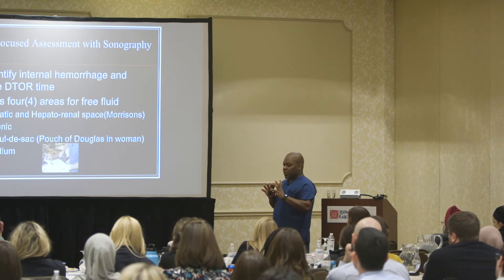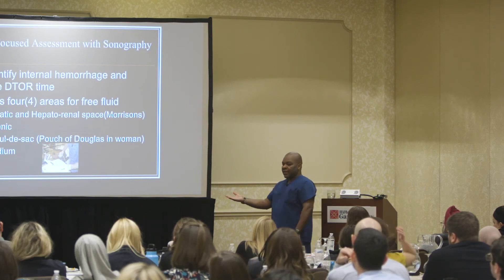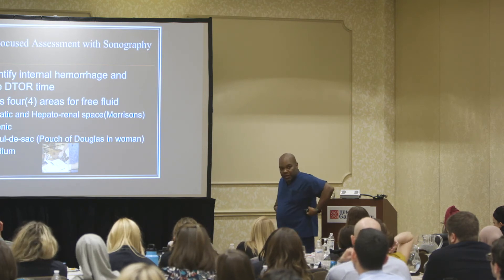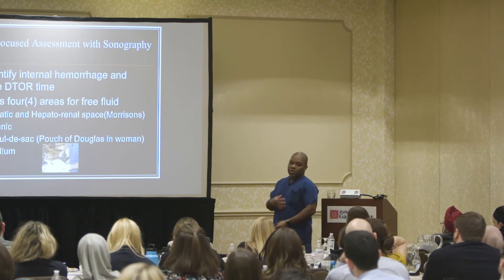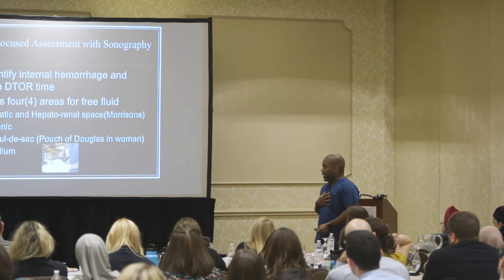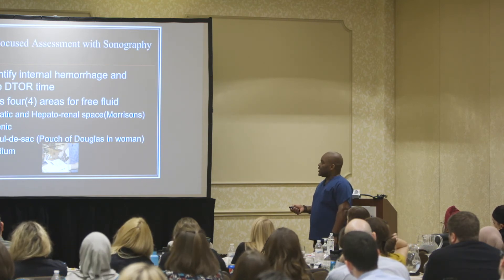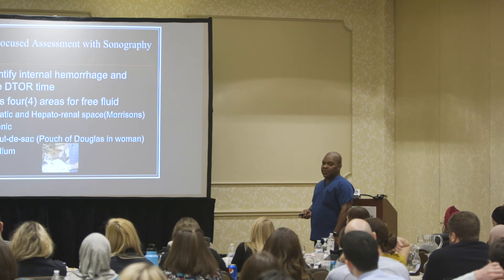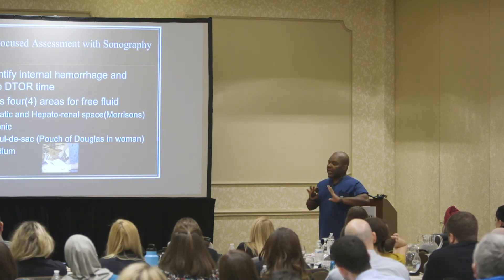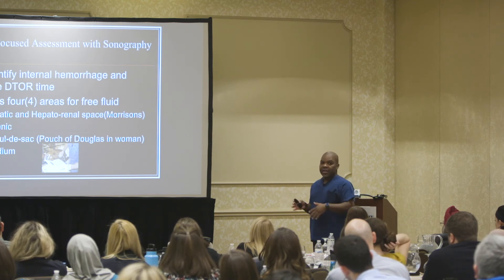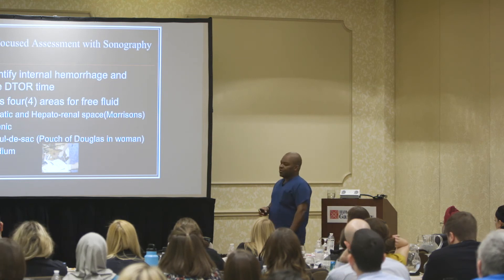The FAST exam lets you look at the dependent portions of the body. If your trauma patient is lying down, the dependent portions will be down in the pelvis. You also look to make sure there's no pericardial fluid because they can die from tamponade. This decreases the door-to-OR time. A patient comes in with a seatbelt sign, positive FAST, hypotension — that's it, you don't need a CAT scan. Two large IVs and they go.